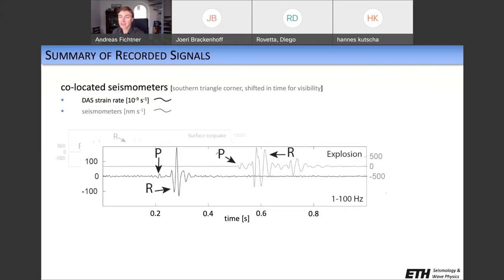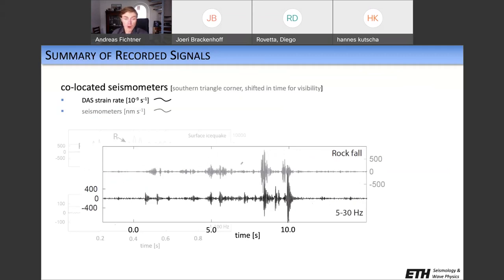In black, you see the strain rate from distributed acoustic sensing. So this is nano strain per second. And in gray, this is the seismometer recording. So this is a velocity recording in nanometer per second. And what you see here with the frequency between 1 and 30 hertz is the surface ice quake. So this is an ice quake that occurred very close to the surface, for example, in one of the many crevasses. And what is marked here with the arrows is the Rayleigh wave arrival from that ice quake. We also performed active tests. So here you see the signal of an explosion, which is at higher frequencies, up to 100 hertz. And we very clearly see a P-wave and a Rayleigh wave in both the DAS and the seismometer recording with pretty nice signal-to-noise ratio.